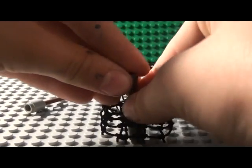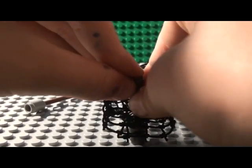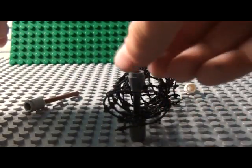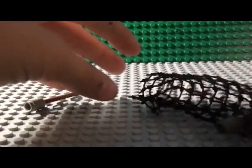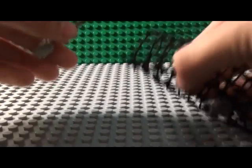Then take your cone thing, stick it on like that. So it should look like that. And then you're going to do the exact same thing for the other one.